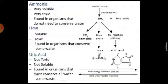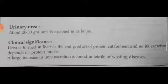During deamination, ammonia is produced from amino acids with release of keto acids. That ammonia is utilized for synthesis of urea via the urea cycle, and uric acid via the uric acid synthesis process. Ammonia is very soluble and very toxic, found in organisms that do not conserve water such as fish. Urea is soluble but less toxic, found in organisms that conserve water. Uric acid is non-toxic and insoluble, found in organisms that must conserve all water.